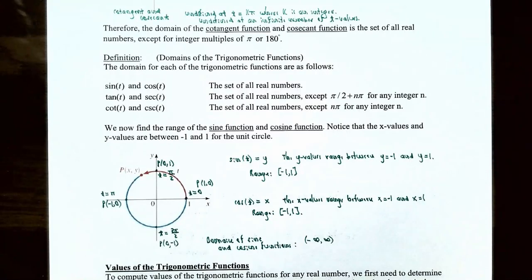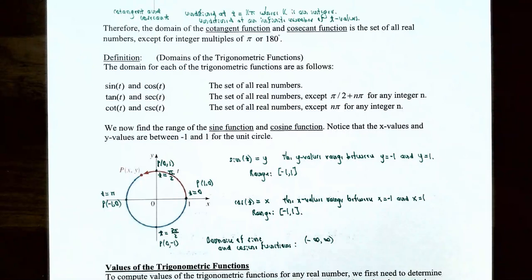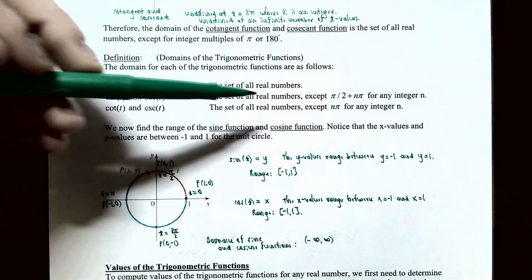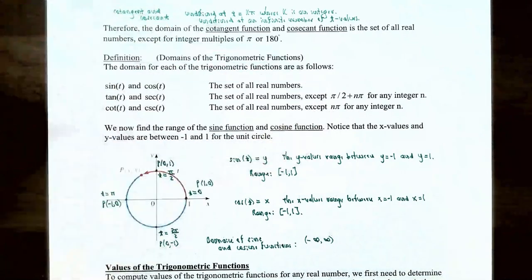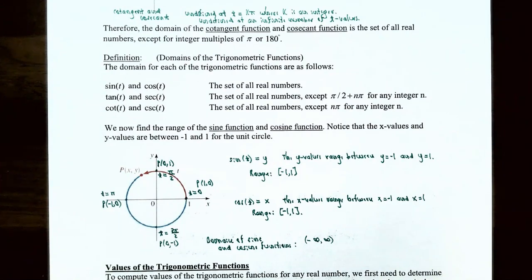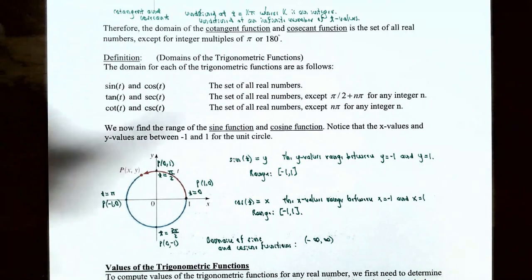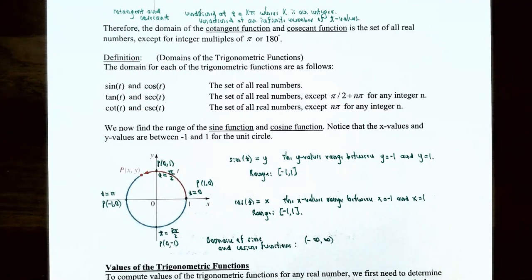To summarize the domains: the domain of the cotangent function and the cosecant function is the set of all real numbers except for integer multiples of pi, or integer multiples of 180 degrees — that is, n times pi where n is an integer.